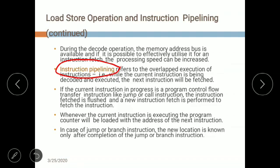A problem with pipelining occurs when there are call, branch, or jump instructions during execution. A normal program executes sequentially line by line. When executing line 11, the program counter will already fetch line 12. But if line 11 is a call or jump instruction, the whole concept of pipelining fails because execution must jump to a new memory location and execute a new set of instructions. Pipelining completely fails when a jump or call instruction is encountered. This applies to single-stage pipelining.